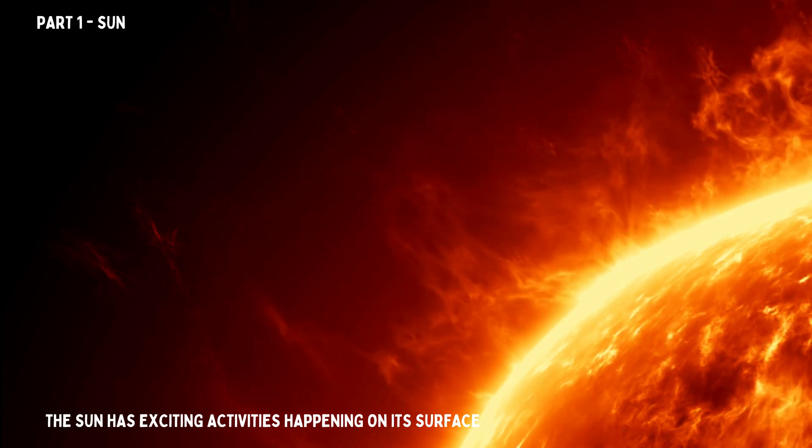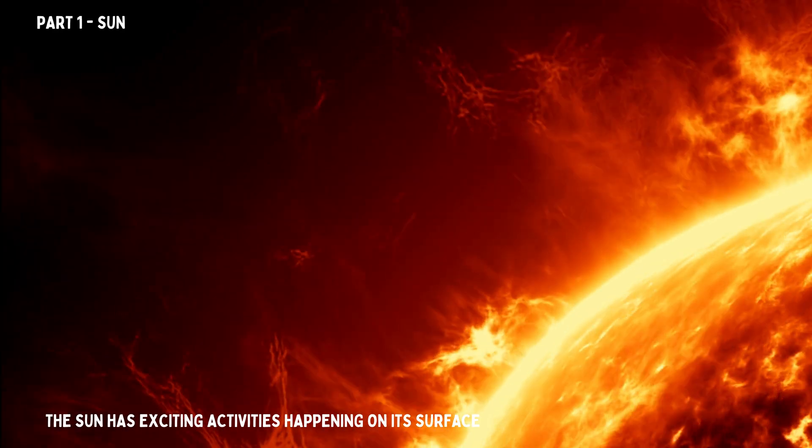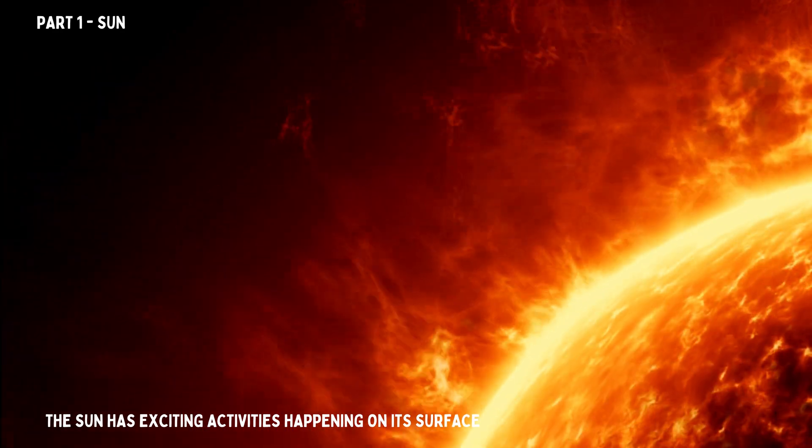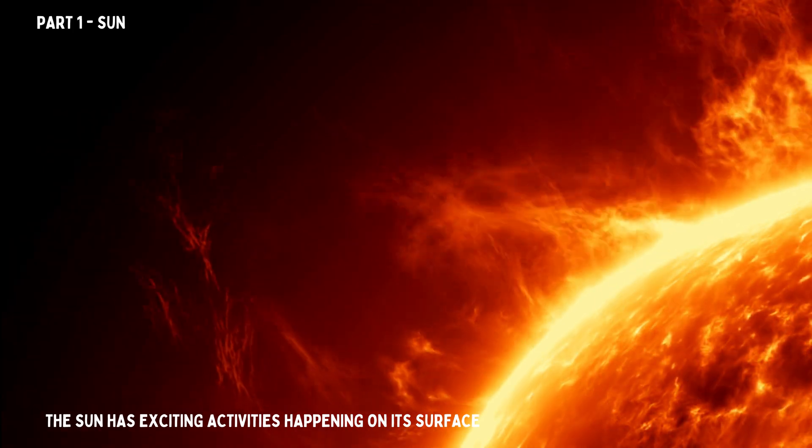Sometimes the sun has exciting activities happening on its surface. It produces solar flares, huge bursts of energy, and sunspots, which are darker areas caused by magnetic activity.